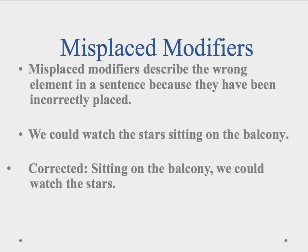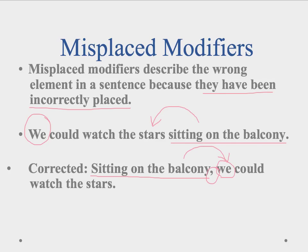A misplaced modifier describes the wrong element in a sentence because it has been incorrectly placed. Here is an example: 'We could watch the stars sitting on the balcony.' 'Sitting on the balcony' is our modifier. Modifiers want to grab the closest noun or pronoun to describe — in this case, it sounds like the stars are sitting on the balcony. But 'we' is supposed to be sitting on the balcony. To fix this, move the modifier to the beginning: 'Sitting on the balcony,' followed by a comma, so it now correctly modifies 'we.'